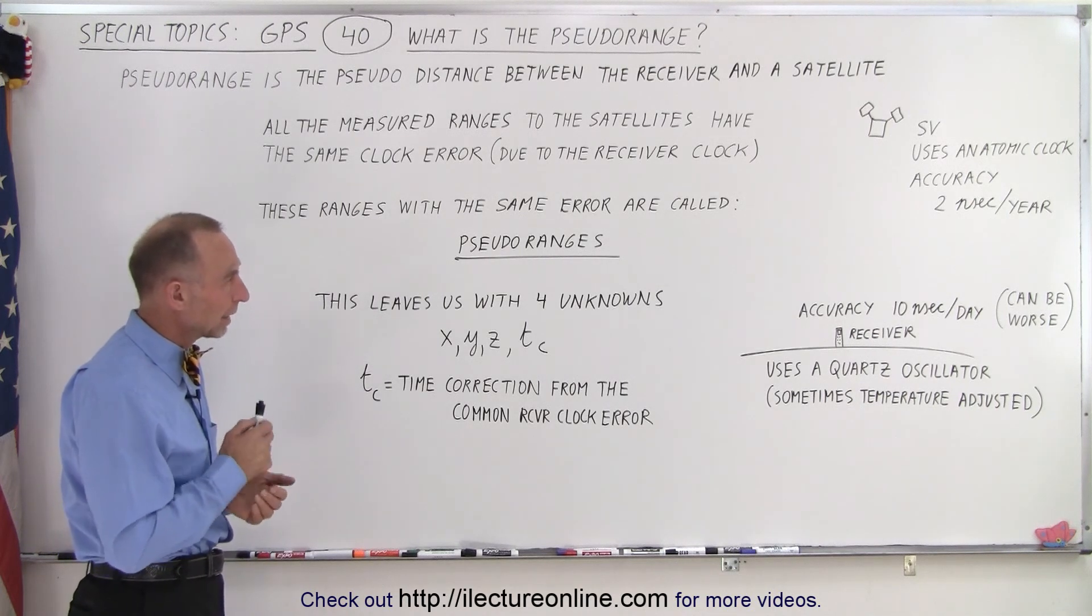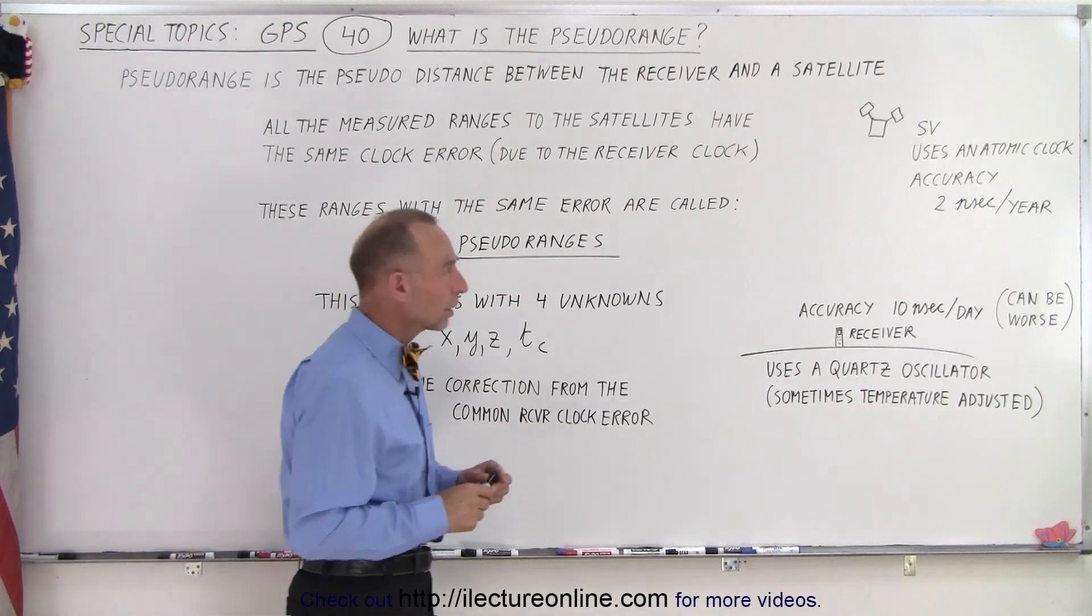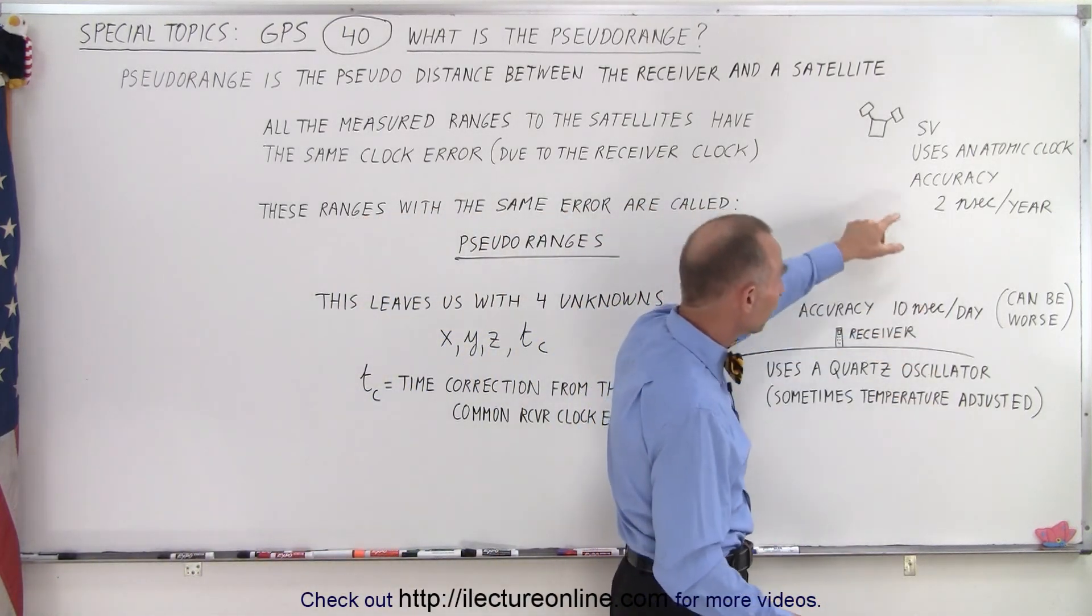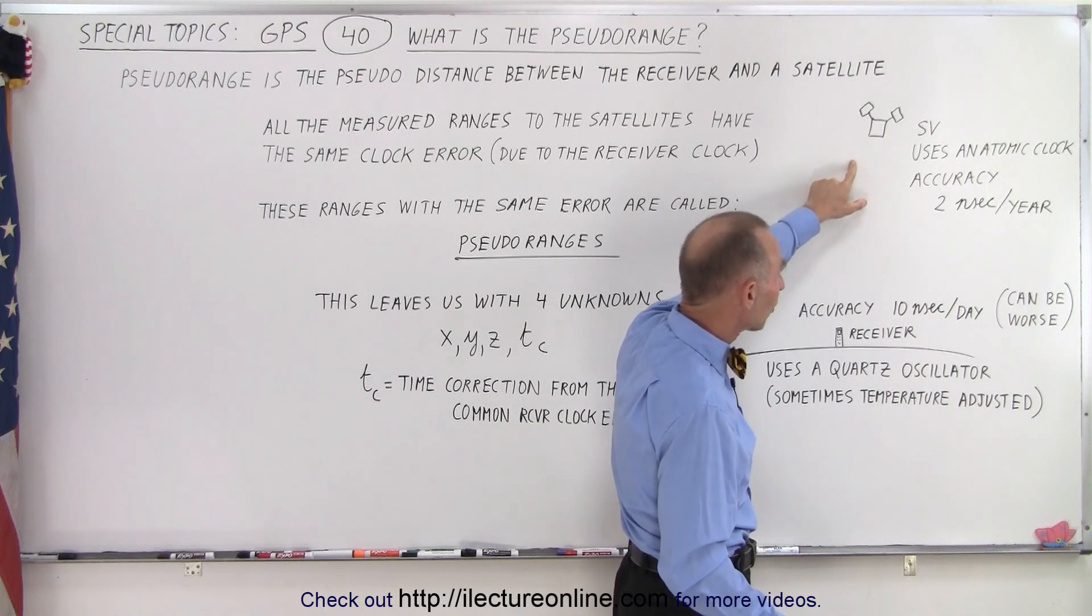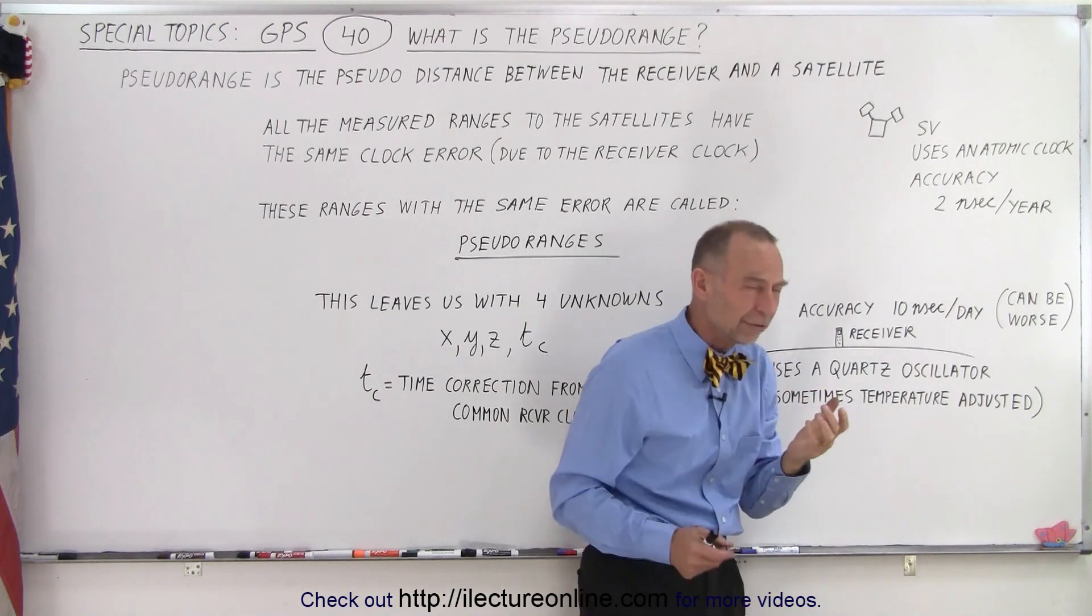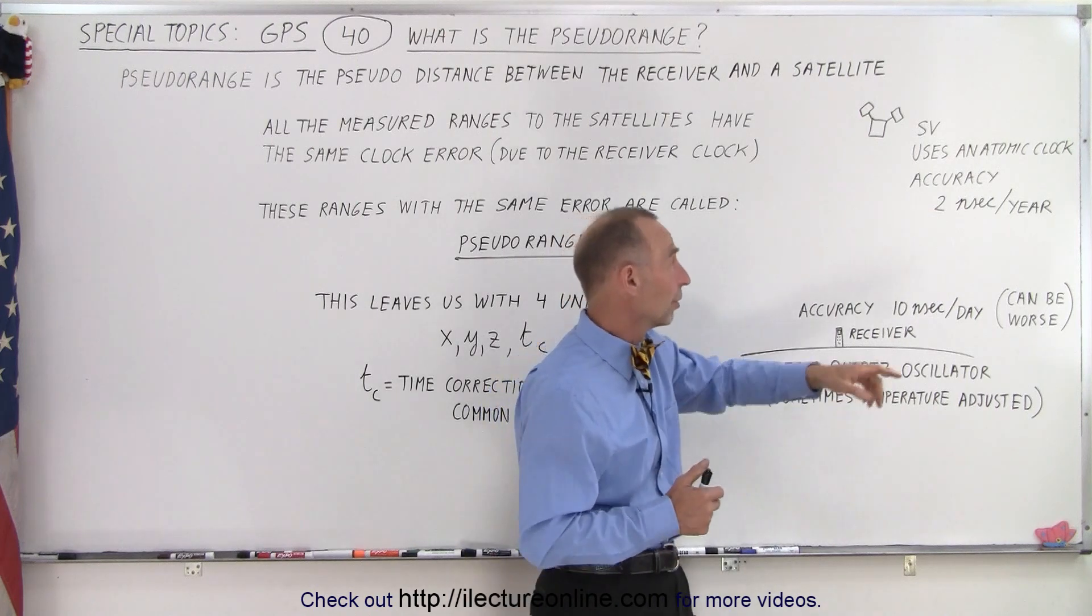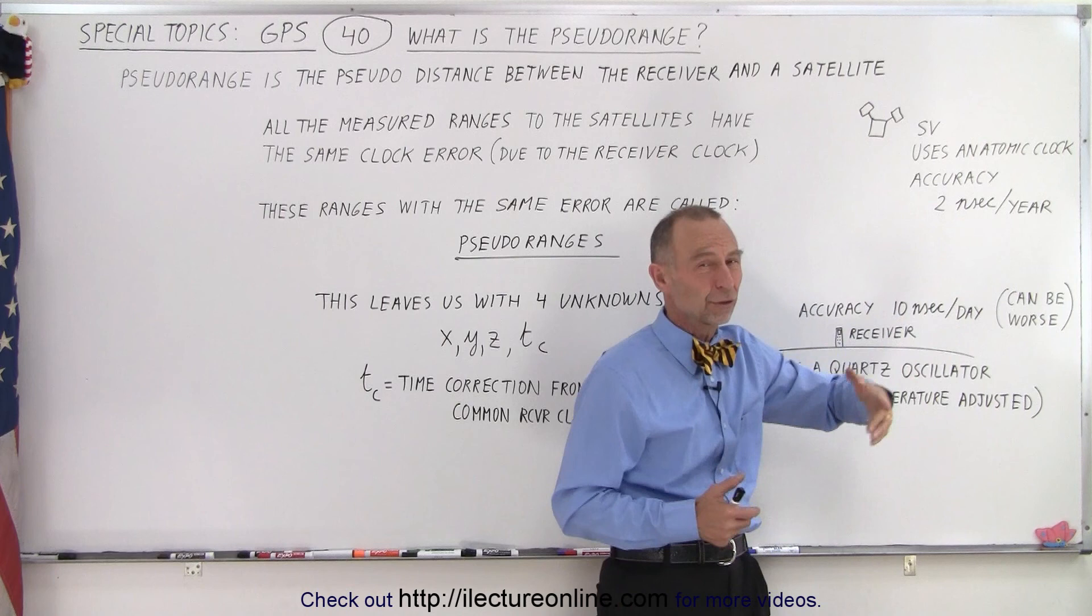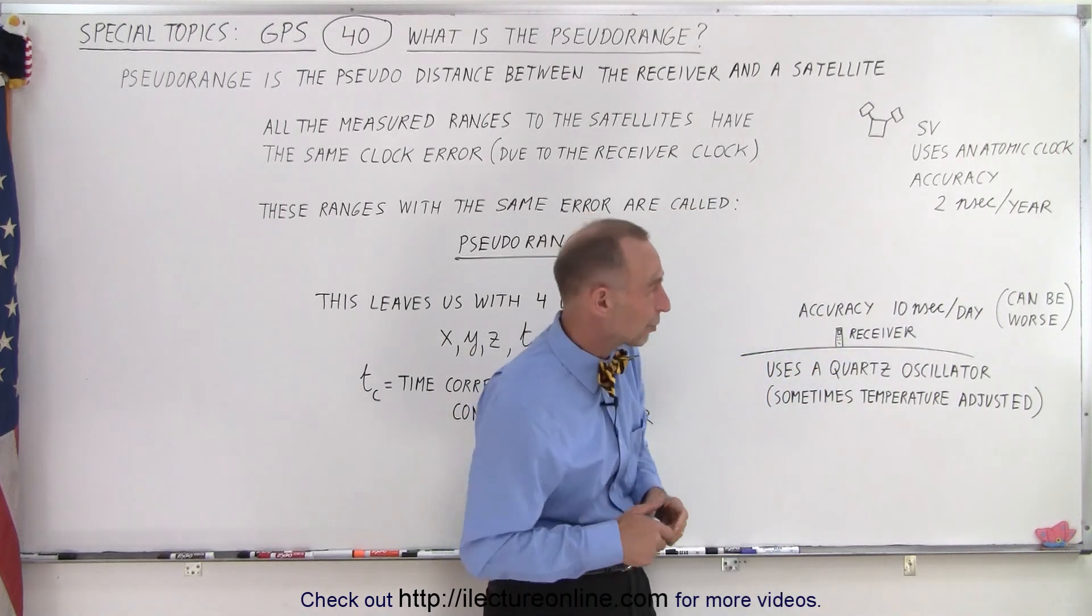So here's the key. The clock on the SV, on the satellite - SV stands for space vehicle - uses an atomic clock up there. It's an atomic clock and therefore it's extremely accurate. The error is two nanoseconds per year, so it has an extremely high accuracy.